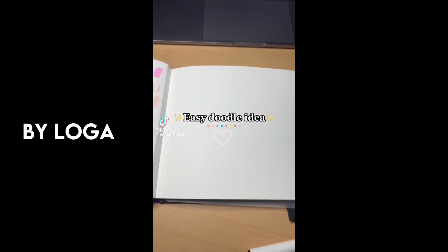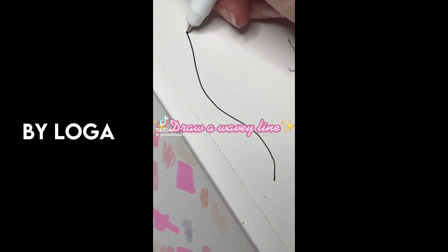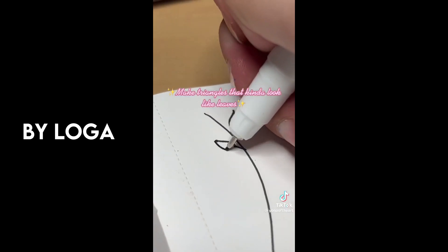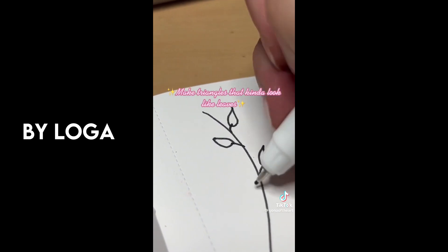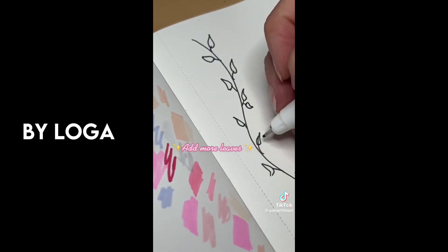Easy doodle idea. Draw a wavy line. Make triangles that kind of look like leaves. Add more leaves.